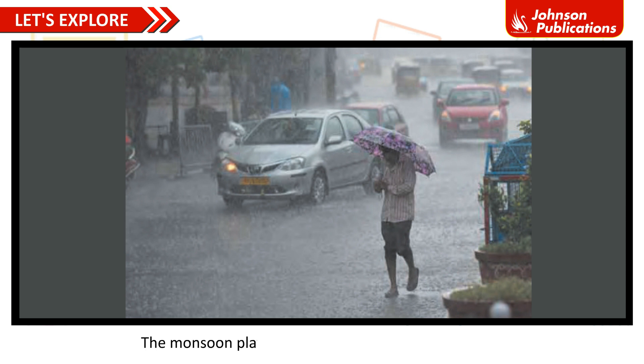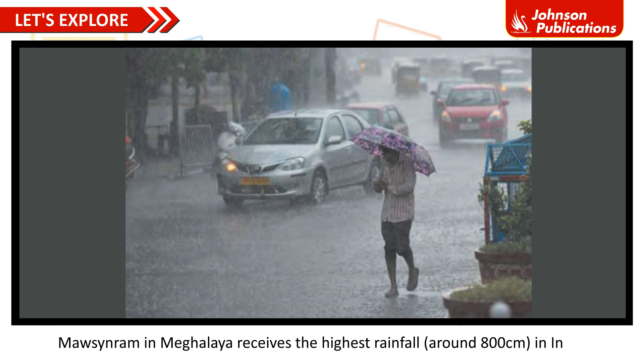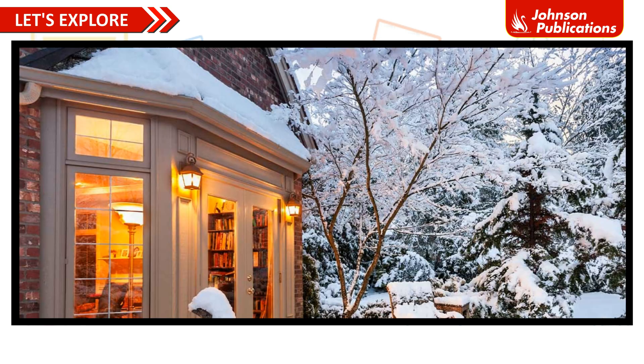The monsoon plays a major role in agriculture in India. Mawsynram in Meghalaya receives the highest rainfall, around 800 cm, in India.